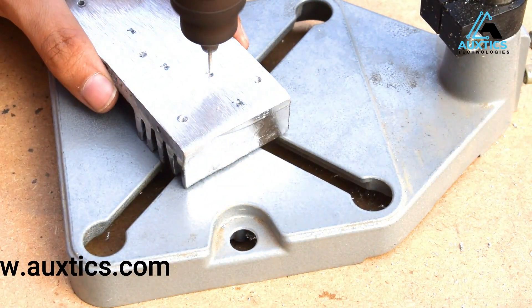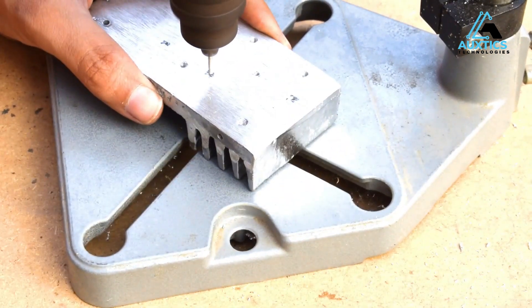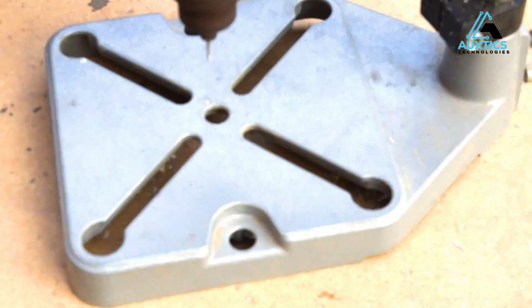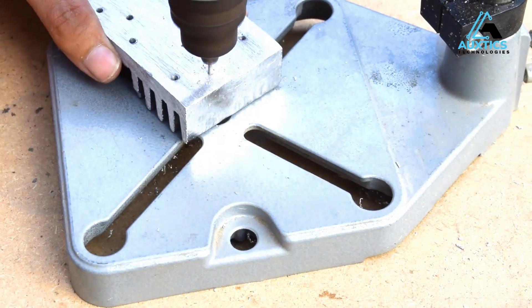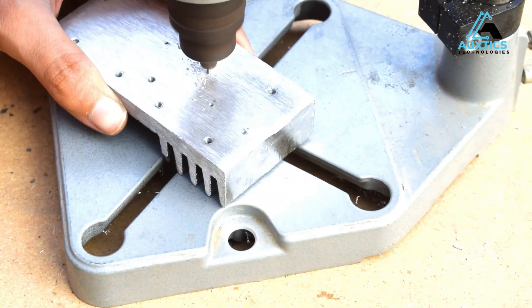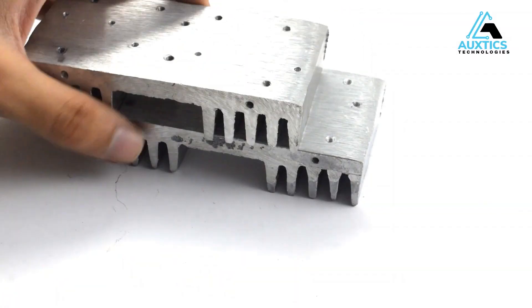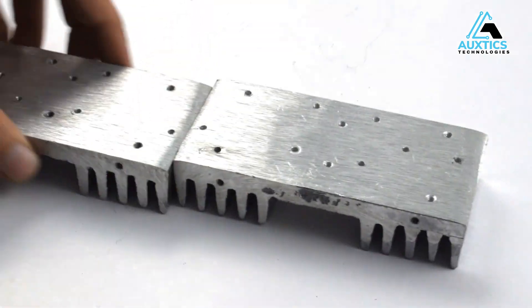Holes are now drilled accordingly and now we will apply compound to the heat sink as well as on the transistors. Heat sink paste or heat sink compound is very important to keep our transistors cool and for the heat transfer.